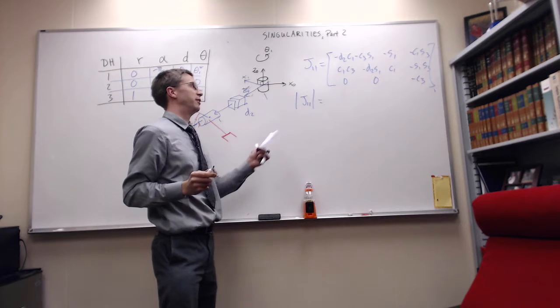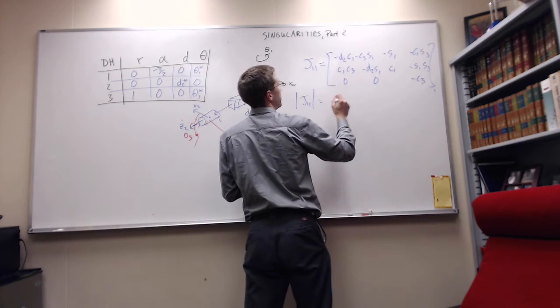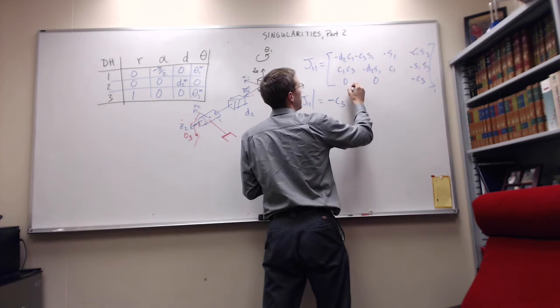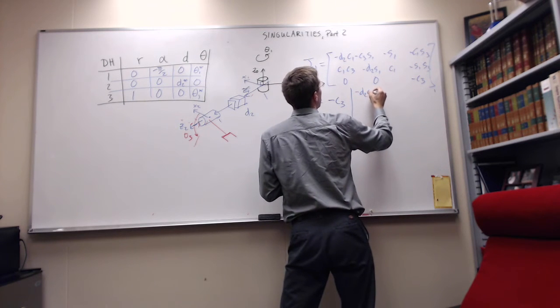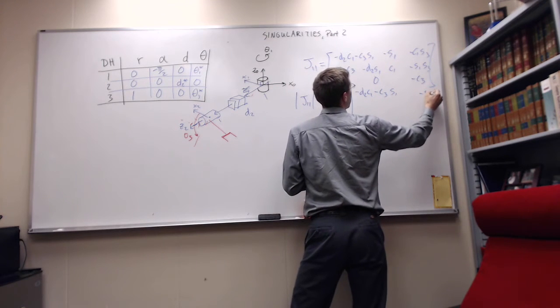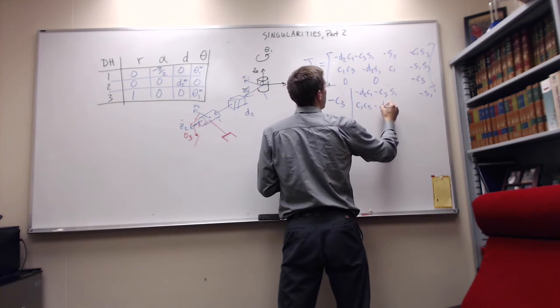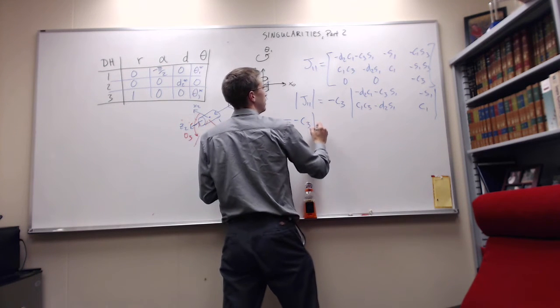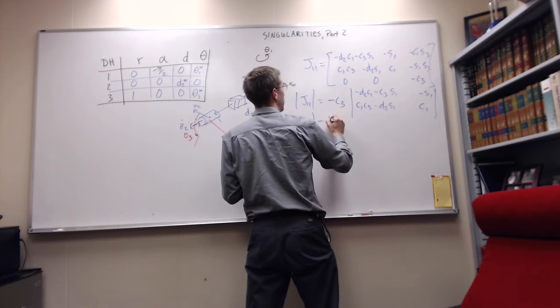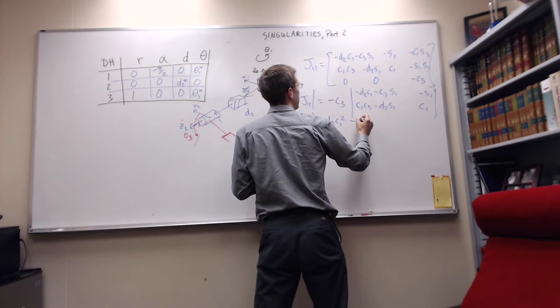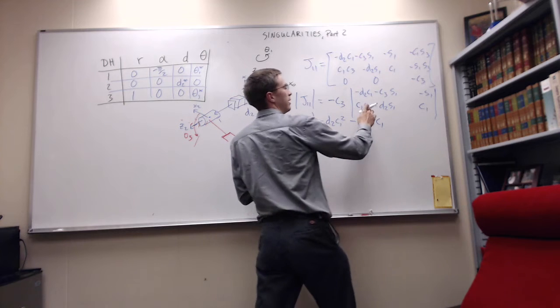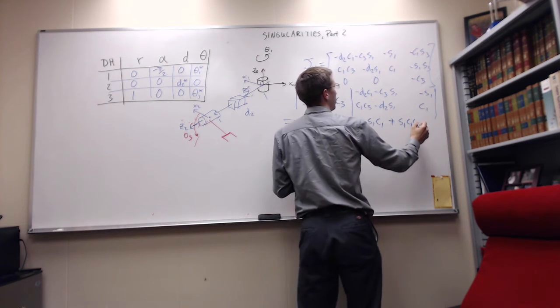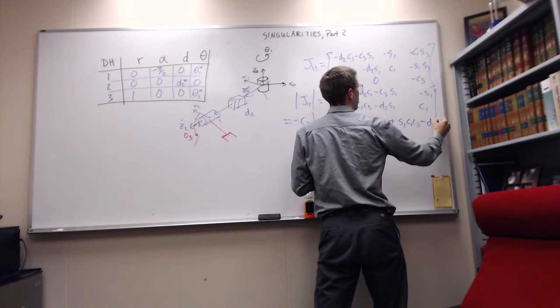Let us calculate the determinant. The determinant of J is equal to, we're going to expand along the bottom row. So we get negative C three times the determinant of this upper matrix. This is negative D two C one minus C three S one, negative S one, C one C three minus D two S one, C one. That term is negative C three. I'm going to cross over the C one, so I get negative D two C one squared minus C three S one C one.